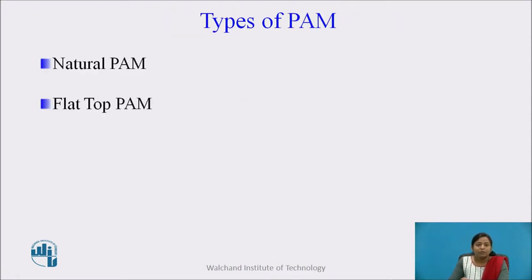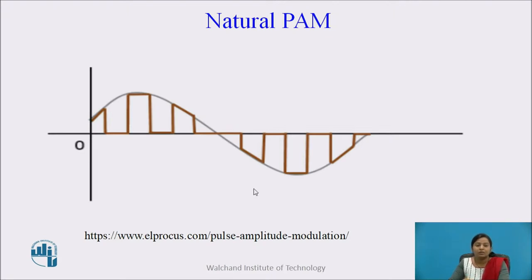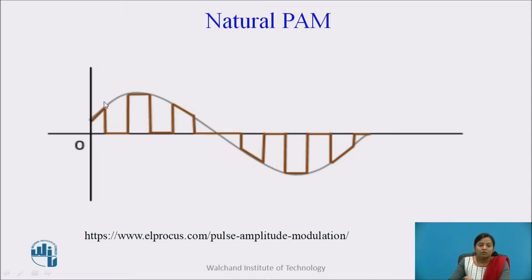There are two types of PAM: natural PAM and flat-top PAM. In the natural pulse amplitude modulated signal, at the starting of the carrier pulse, its amplitude is equal to the instantaneous amplitude of the continuous time signal. And for the rest of this cycle, it follows the amplitude of the continuous time signal. So the top of all these pulses follows the natural shape of the continuous time signal. It is called natural PAM.